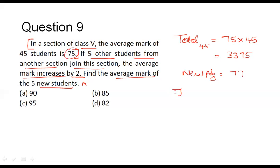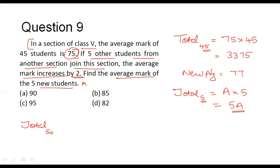The total marks obtained by these 5 students corresponds to average into number of observations, that is 5A. The total number of students originally considered was 45, and adding these 5 students gives 45 plus 5, equal to 50. The total marks obtained by all 50 students is 3,375 plus the total marks of the 5 new students, which is 5A.